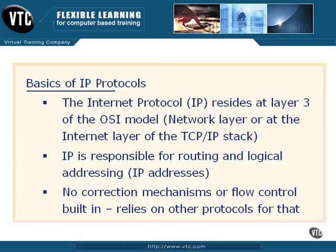Because all IP does is routing and logical addressing, it's not a heavy protocol. There's not a lot of overhead to it, so it doesn't have any correction mechanisms or flow control capabilities built in. It pretty much relies on other protocols for that. If a packet gets lost or dropped, a higher level protocol such as TCP has to request that data again. IP doesn't take care of it — as far as it knows, it's just sending data. It may not know that some of the data it sent was requested again from the TCP layer above it.